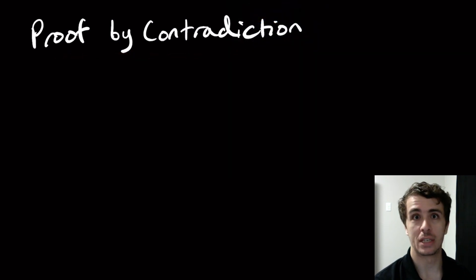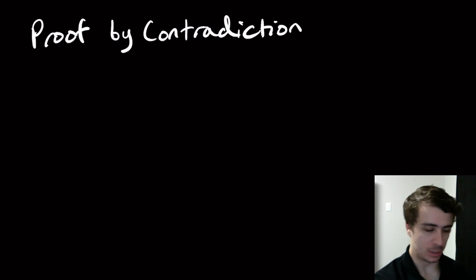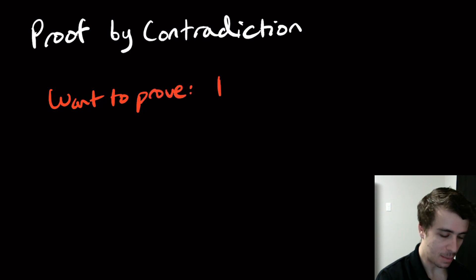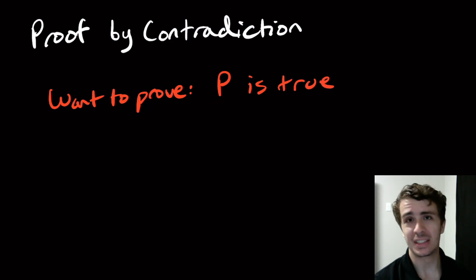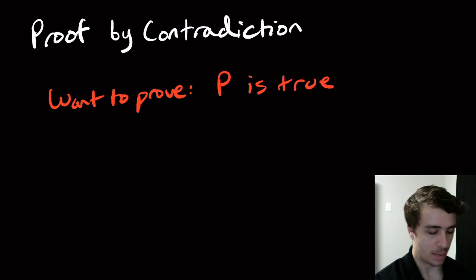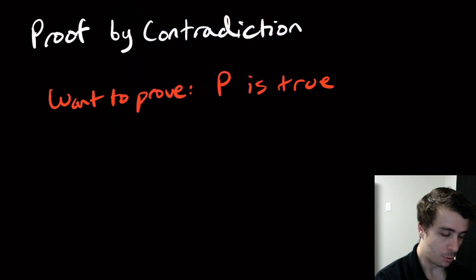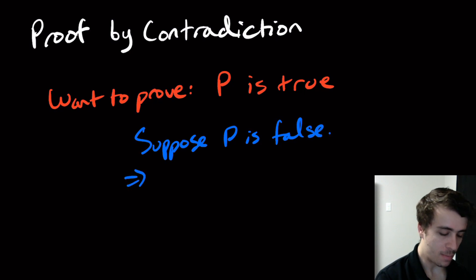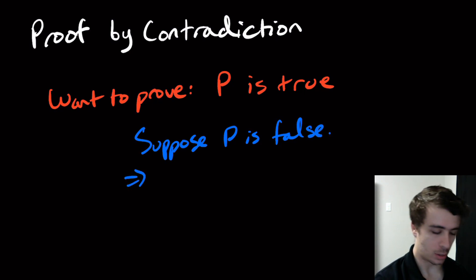Proof by contradiction is an astoundingly powerful proof technique, and it's actually really simple to understand. So let's say that we want to prove some statement P is true. What we want to do with proof by contradiction is to suppose that P is false, and then from that supposition alone, we derive a contradiction.